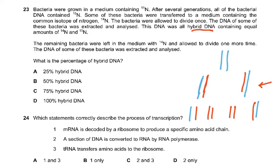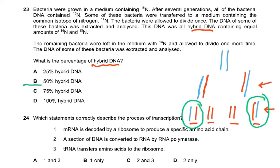The remaining bacteria were left in N14 and allowed to divide one more time. The DNA was extracted and analyzed. What is the percentage of hybrid DNA? So we have four DNA. Out of these, two are hybrid. Two out of four means one over two, means 50 percent was hybrid DNA.